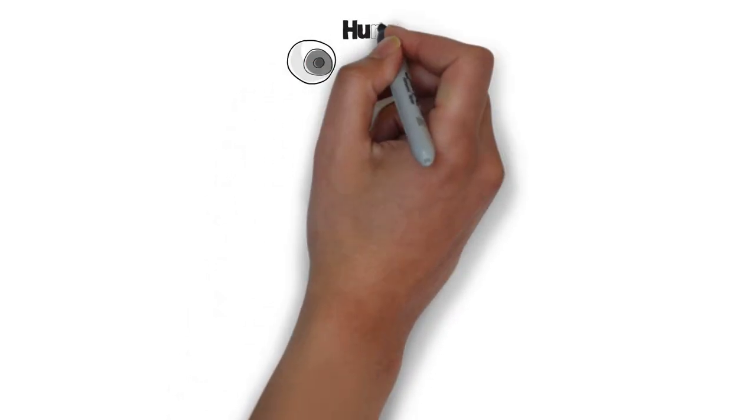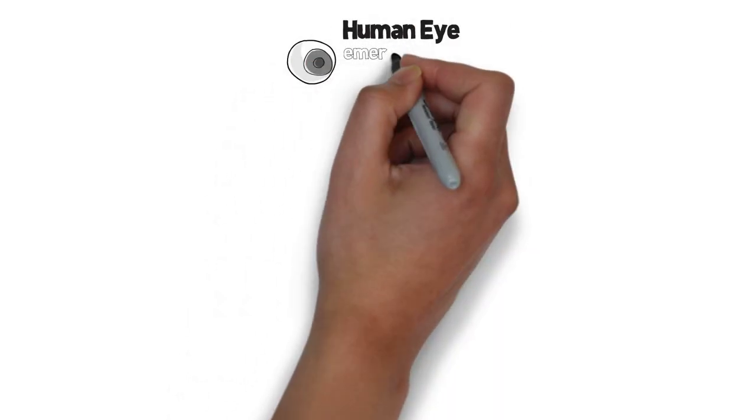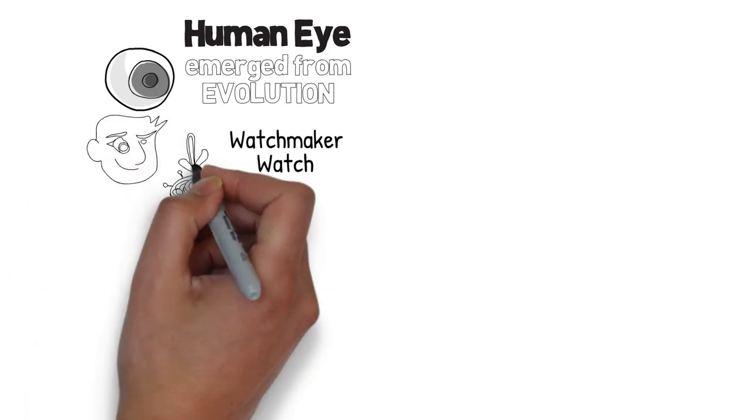To some people it seems unlikely that something as complex as the human eye could have emerged from the process of evolution. They say that just as a watch implies the existence of a watchmaker, the eye implies the existence of a designer.